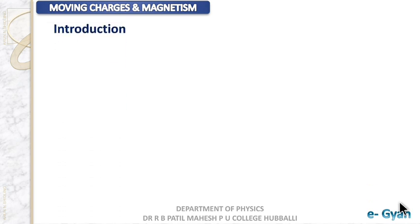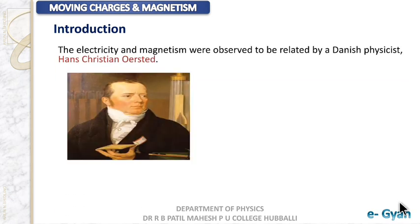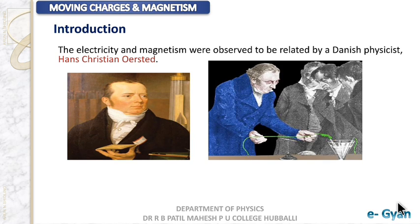To begin with the introduction: this chapter deals with the relationship between electricity and magnetism. This relationship was first observed by a Danish physicist Oersted. During one of his lectures, he observed that when a current carrying wire is brought near to a magnetic compass, the compass started deflecting.